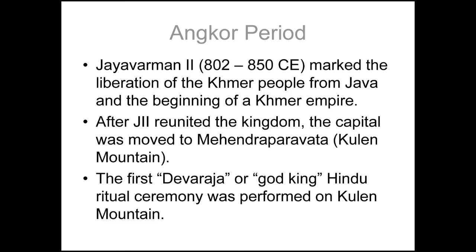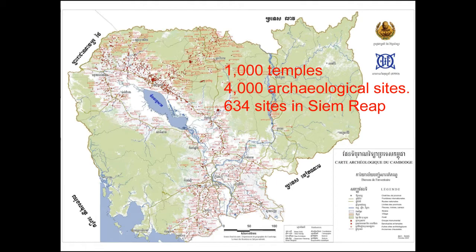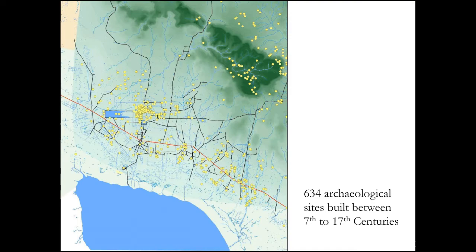As you can see in this map, according to the inventory by the École Française d'Extrême-Orient and the Ministry of Culture and Fine Arts in Cambodia, they made an inventory of sites and found about 1,000 temples and 4,000 archaeological sites. Among them, there are 634 sites located in Siem Reap province. Most of the archaeological sites are located between Phnom Kulen on the north and the Great Lake Tonle Sap, and those sites were built between the 7th to the 17th century.